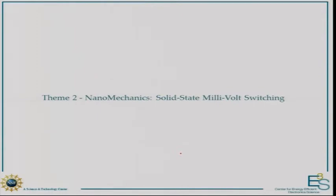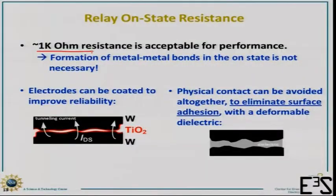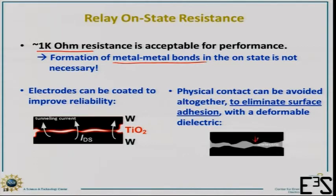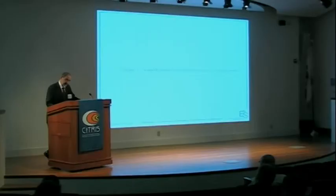One of the reasons why a nanomechanical switch for logic can be very efficient is that it doesn't have to carry much current or have very low resistance. At a kiloohm, one is already well matched to the load in chips. That means you don't need metal-metal contact — you just need to decrease the spacing between two electrodes and you already get enough tunneling to have one kiloohm in the on state.